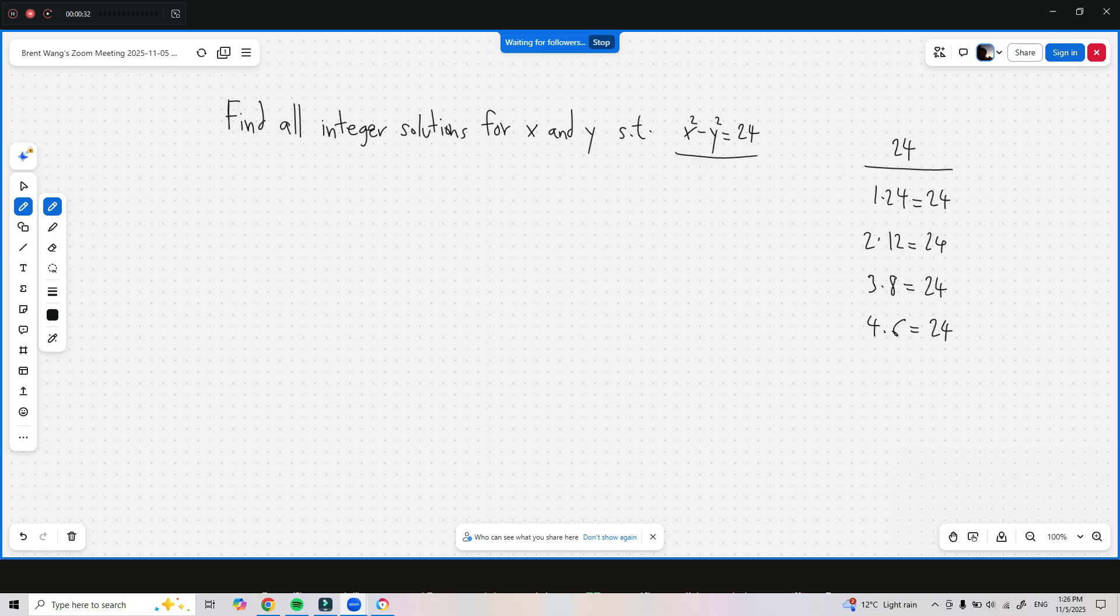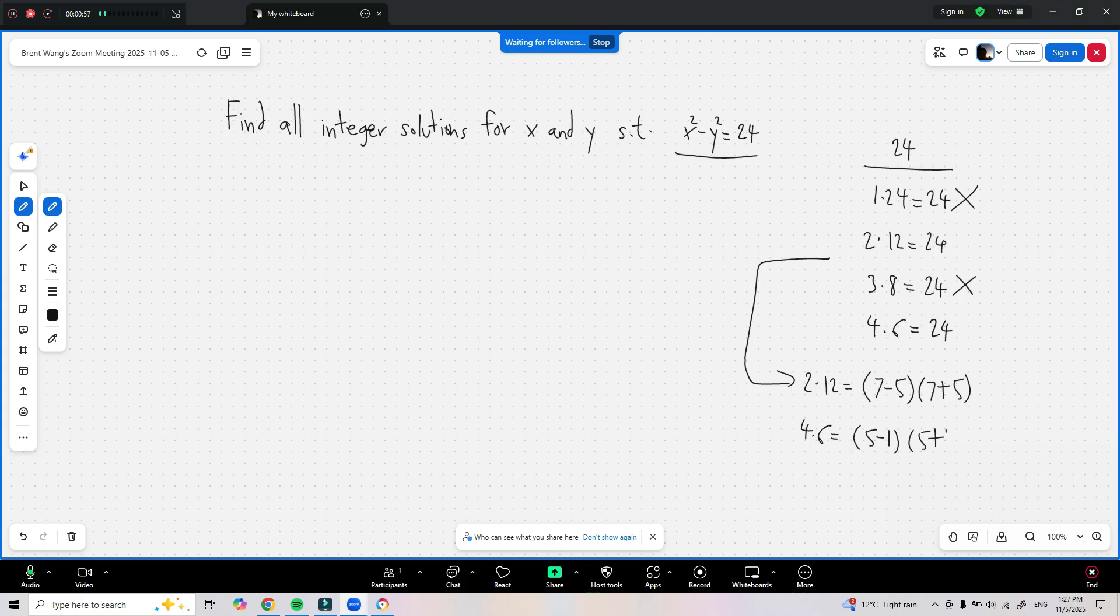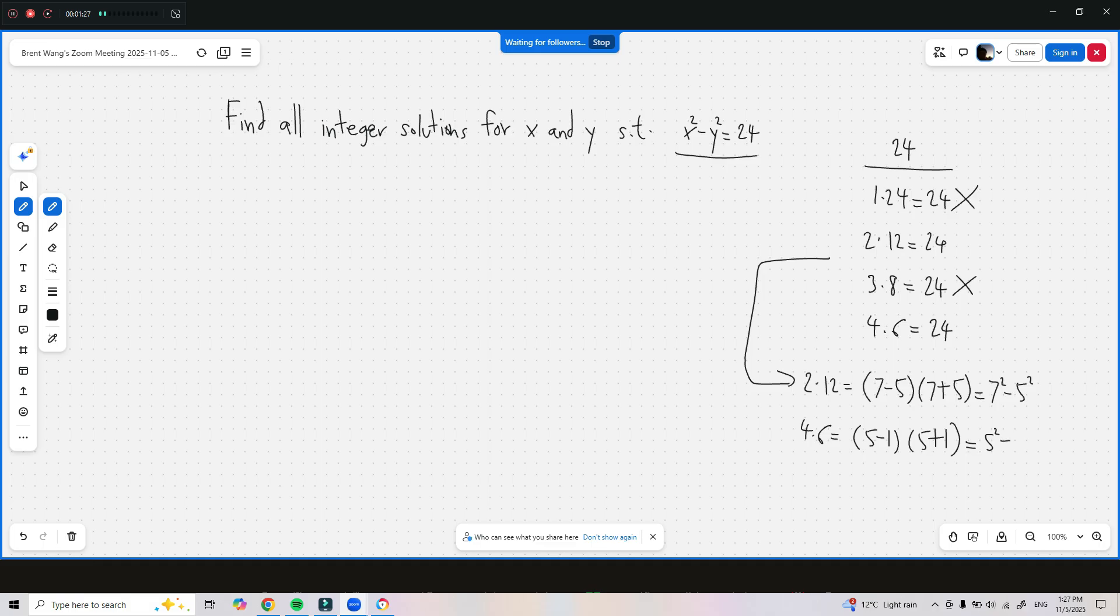Now, 1 times 24 does not provide a difference of squares of integers, and 3 times 8 does not provide a difference of squares of integers. So, 2 times 12 is equal to 7 minus 5, 7 plus 5. And 4 times 6 would equal to 5 minus 1, 5 plus 1. Here, it's equal to 7 squared minus 5 squared. And here, it's equal to 5 squared minus 1 squared.